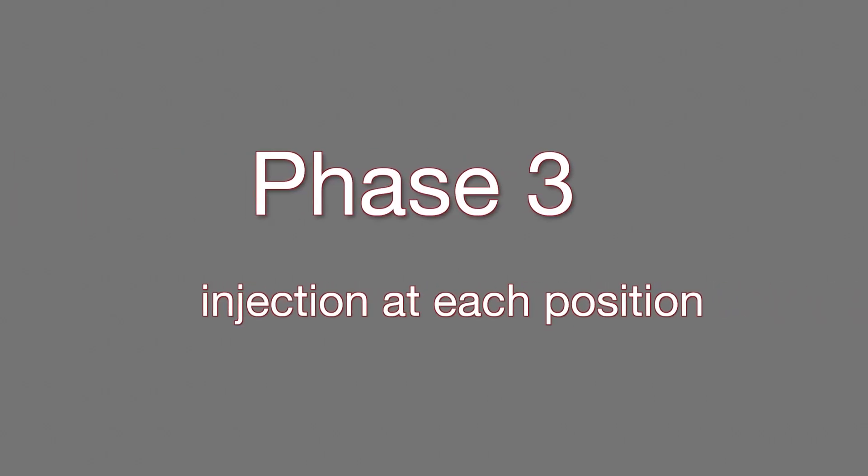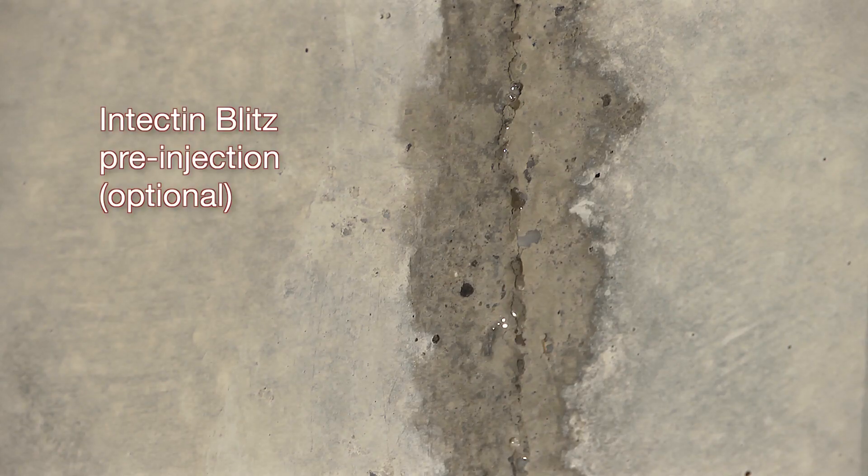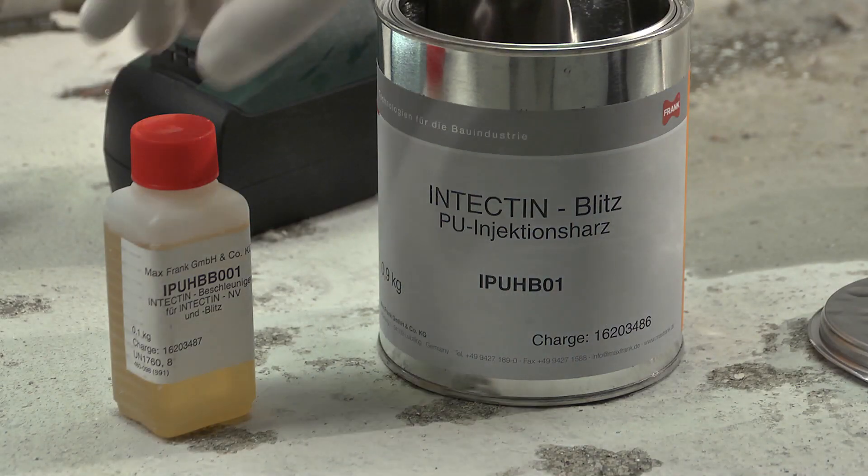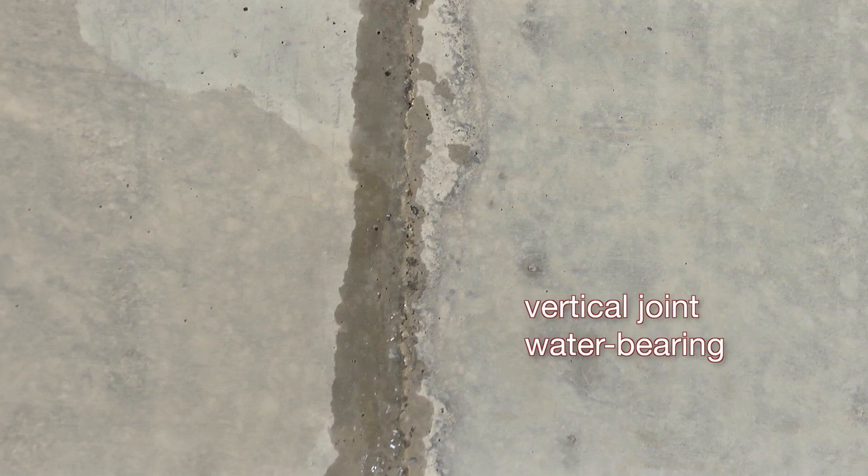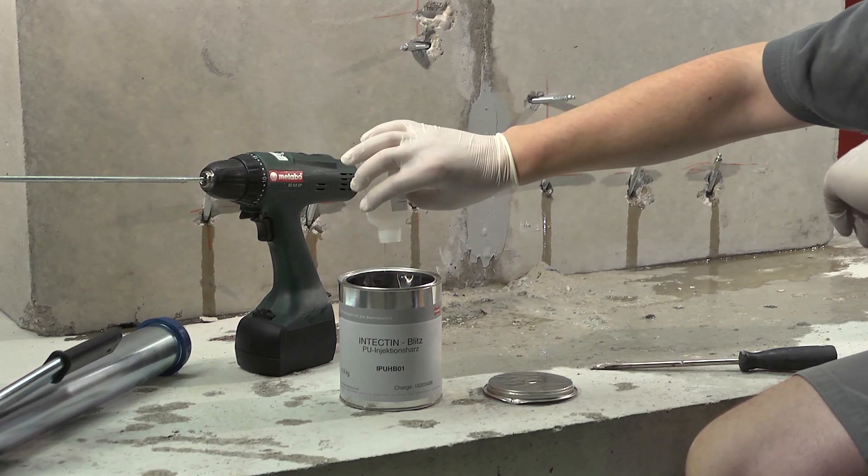Crack or joint injection: for all cracks or joints with a strong active water flow, the first priority must be to stop the flow of water. If such water flow is not contained, the Intectin Plus sealing resin would simply be washed out of the crack or joint before it had a chance to cure.